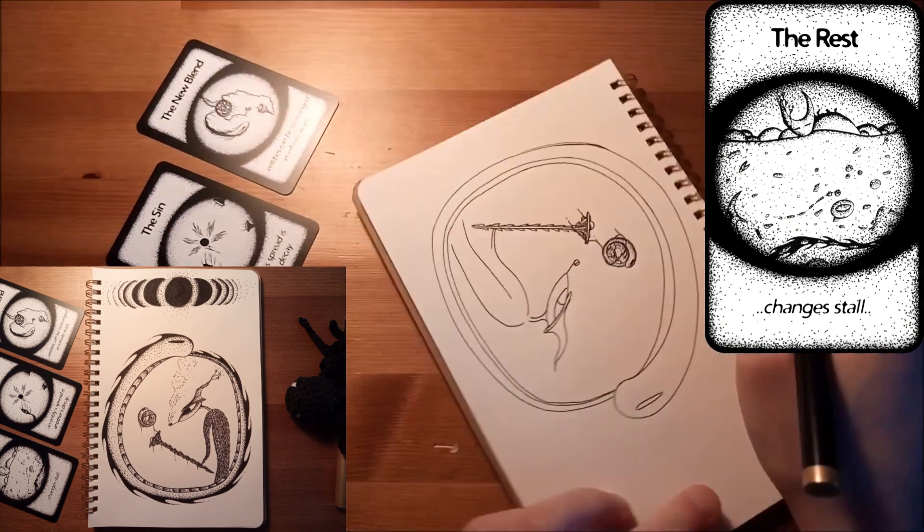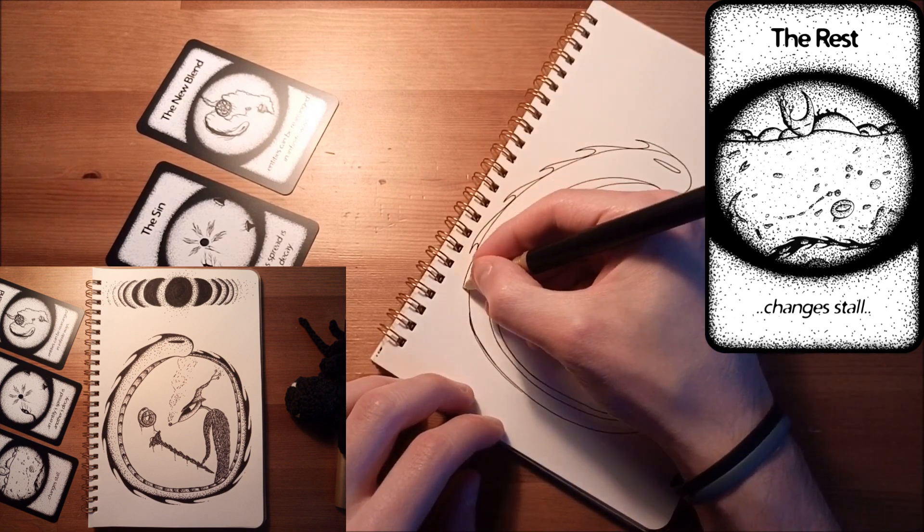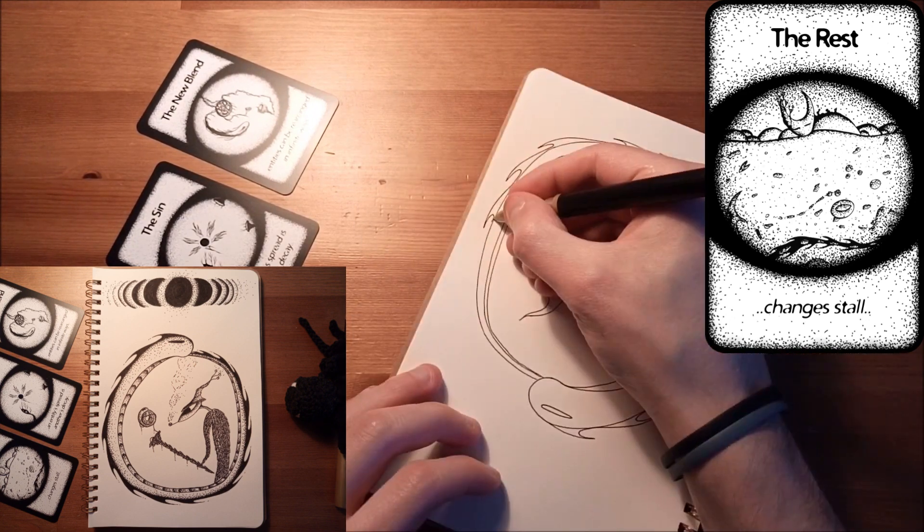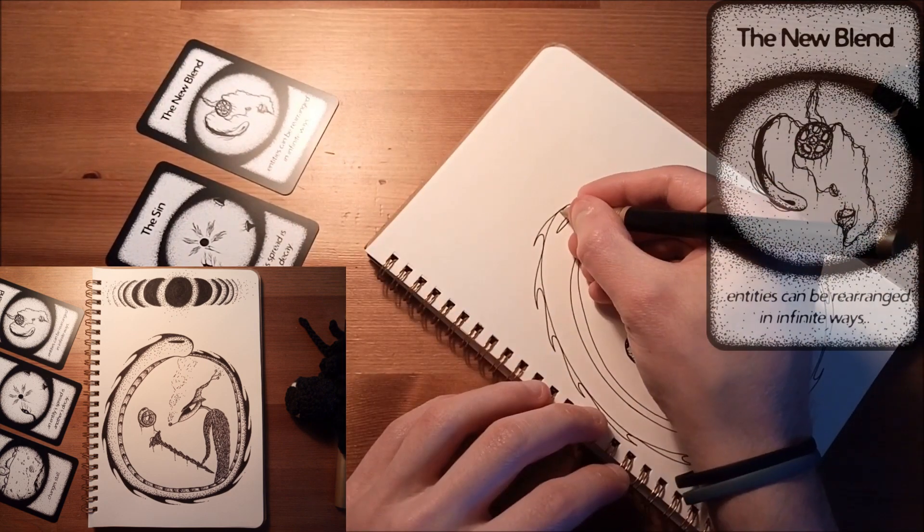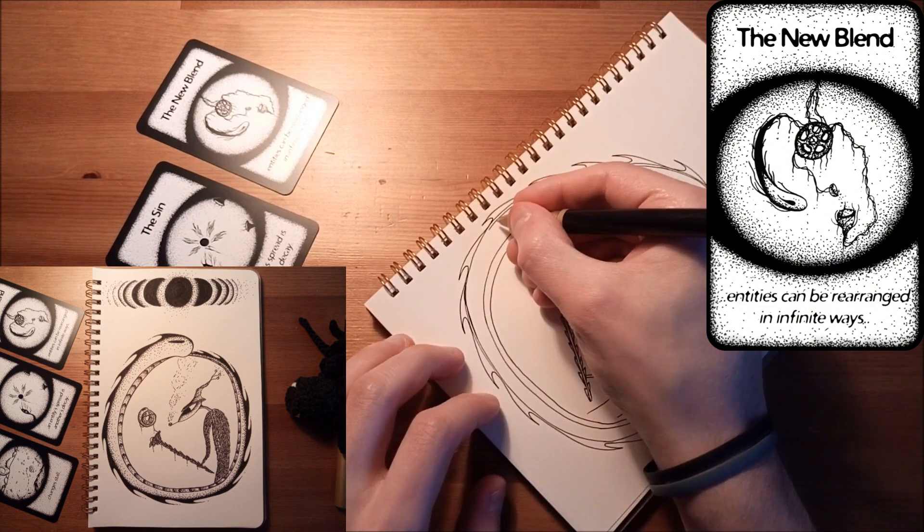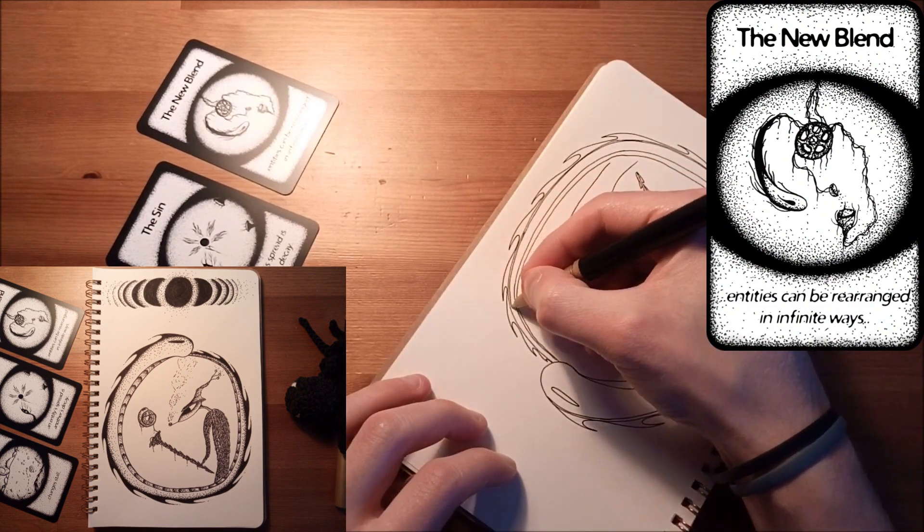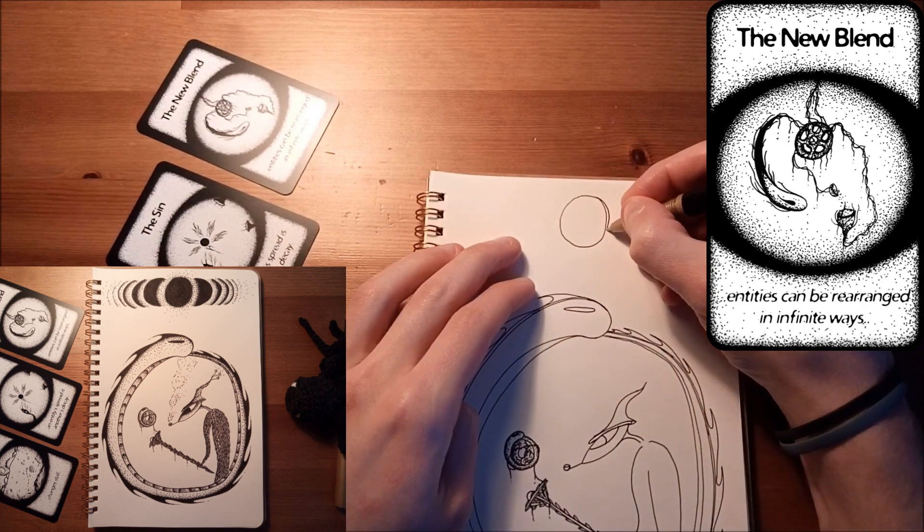But let's read the second pathway to get a bit more information as to what's happening in this scene. The second pathway, the second card that I drew for this doodle was 'The New Blend,' which states that entities can be rearranged in infinite ways.